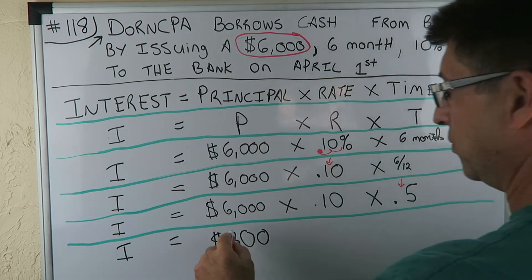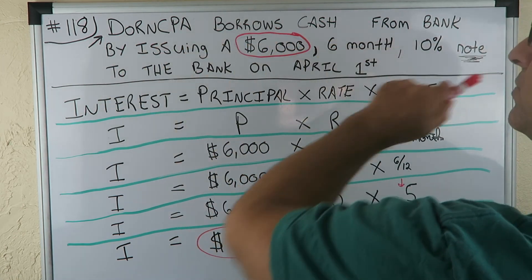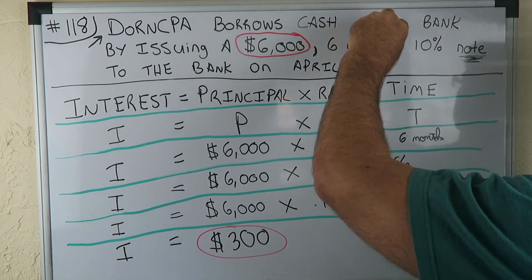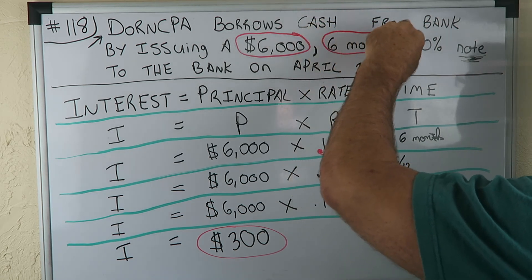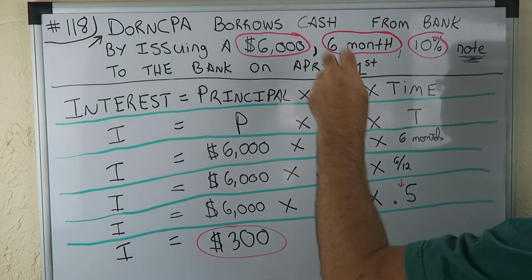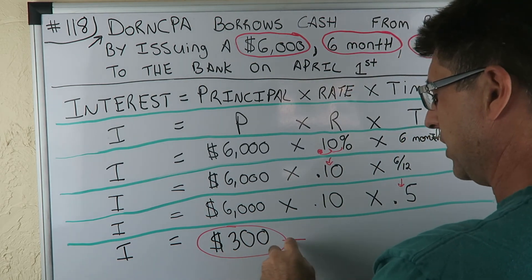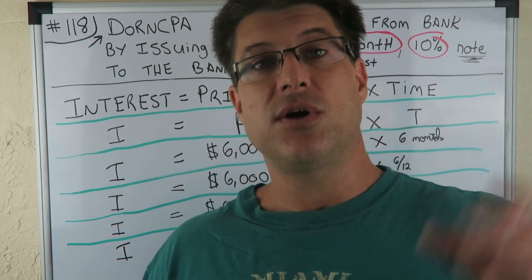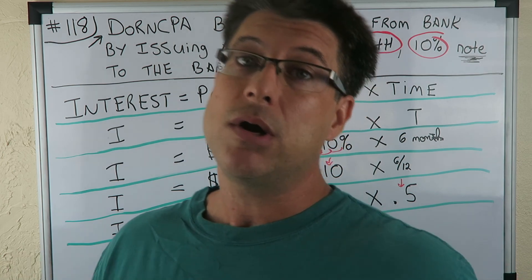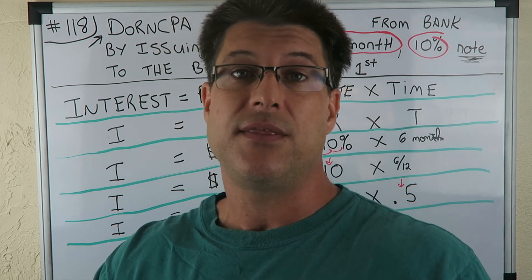So interest equals 6,000 times 0.10 times 0.5, which is $300. For this problem we're going to have $300 of interest. Dorn CPA borrows $6,000 from the bank — that's our principal — for six months, half a year, 0.5, times our rate of 0.10, note to the bank on April 1st. When we pay it back six months later, the interest is going to be $300. Please go to the next video — we're going to pay back the principal and the interest.